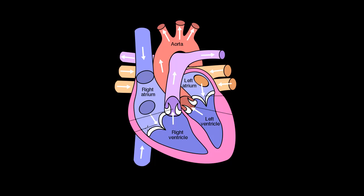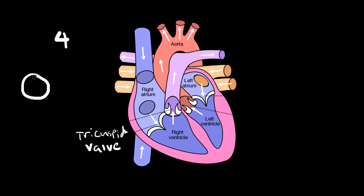The first valve I'm going to talk about is right here between the right atrium and the right ventricle. We have four total valves in our heart. This first one is called the tricuspid valve. The reason it's called that is because it has three different flaps that prevent the backflow of blood. These flaps are going to prevent the blood from going back into the right atrium.